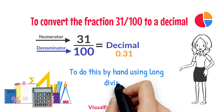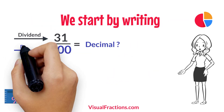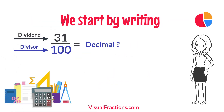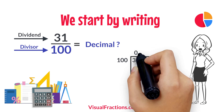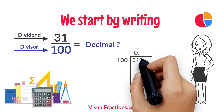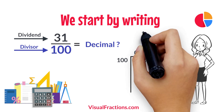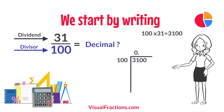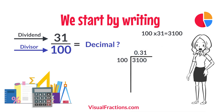To do this by hand using long division, we start by writing 31 as the dividend and 100 as the divisor. Since 100 doesn't fit into 31, we add a decimal point in our answer and append two zeros to 31, making it 3,100. How many times does 100 go into 3,100? Exactly 31 times. We write 31 after the decimal point in the quotient, making it 0.31.